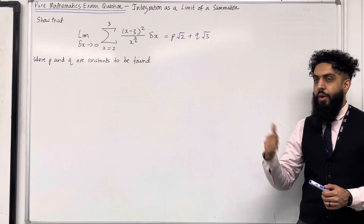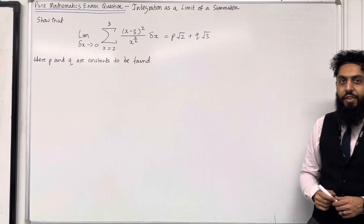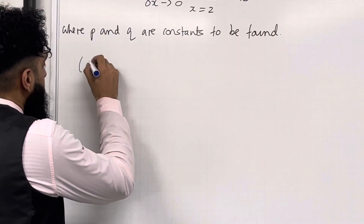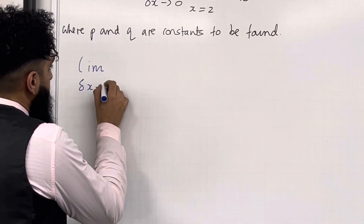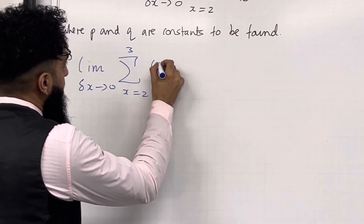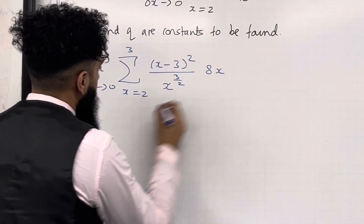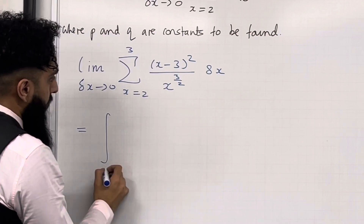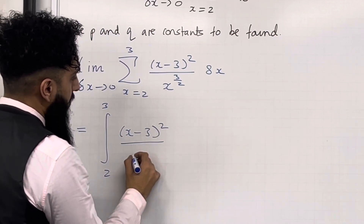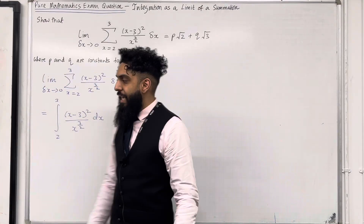Pause the video, have a go at the question. Once you've got your complete solution, play the video. Let's have a look at the solution. By definition, we know that the limit as delta x tends to 0 of the sum from x equal 2 to 3 of (x minus 3) squared over x to the power 3/2, delta x, is equal to the integral from 2 to 3 of (x minus 3) squared over x to the power 3/2 dx.